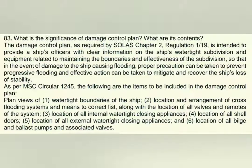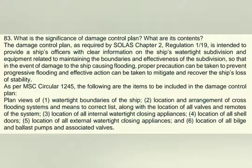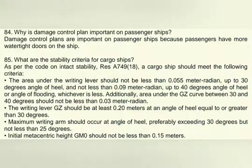As per MSC Circular 1245, the following items are to be included in the Damage Control Plan: 1. Watertight boundaries of the ship. 2. Location and arrangement of cross-flooding system and means to correct it, along with the location of all valves and remotes of the system. 3. Location of all internal watertight closing appliances. 4. Location of all shell doors. 5. Location of all external watertight closing appliances. 6. Location of all bilge and ballast pumps and associated valves.